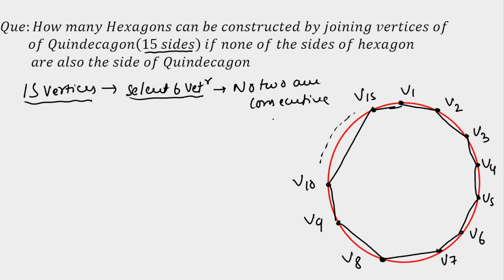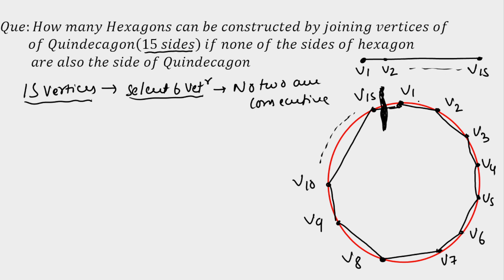This type of question can also be asked as: 15 people are sitting at a round table — select 6 such that no two are consecutive. It can be asked in many ways. Now, instead of calculating directly on a circle, I am going to work on a straight line. To do that, I will break the circle at the point between v1 and v15, so all 15 vertices come on a straight line.